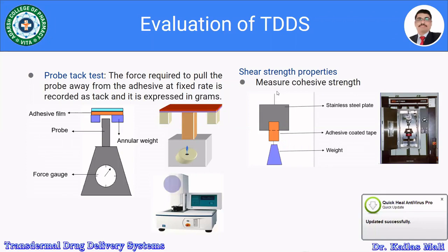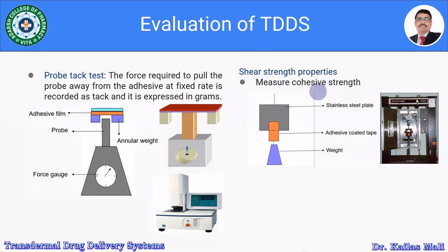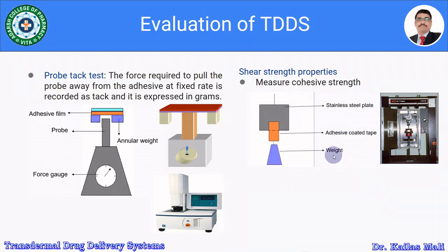The shear strength test is a measure of cohesive strength. The apparatus consists of a stainless steel plate with an adhesive-coated tape and a weight. This completes the adhesive tests used to evaluate transdermal patches.